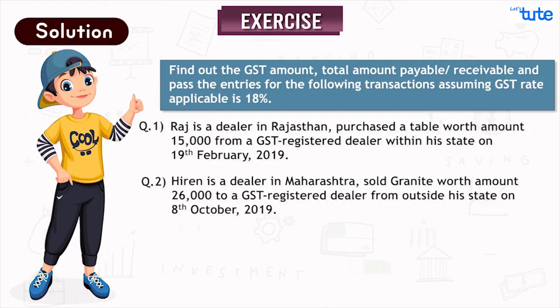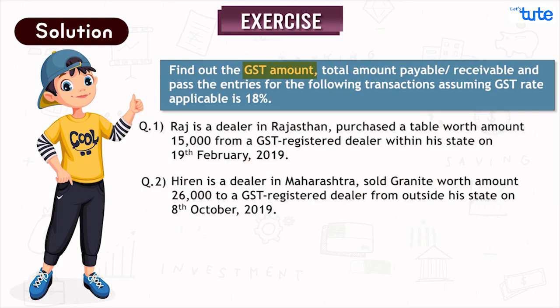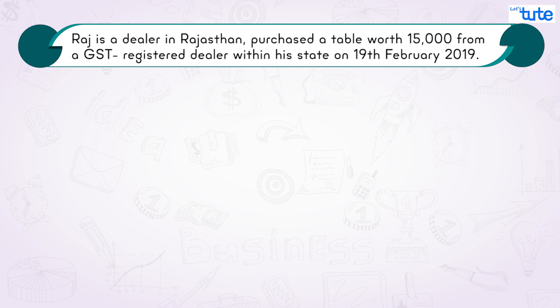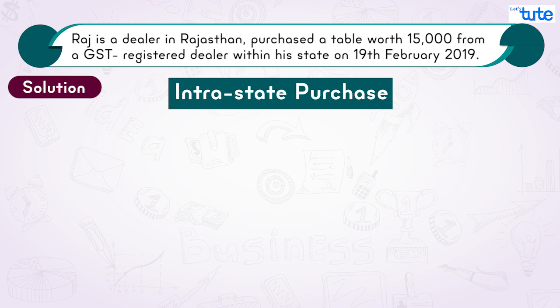Let's discuss the solution for the previous video's exercise. There were two questions where you were asked to calculate the GST amount, find out the total amount receivable or payable, and pass the journal entries. The GST rate given was 18%. Question one: Raj is a dealer in Rajasthan who purchased a table worth ₹15,000 from a GST-registered dealer within the state on 19 Feb 2019. Since this is an intrastate purchase, the GST of 18% will be equally divided into CGST and SGST at 9% each.